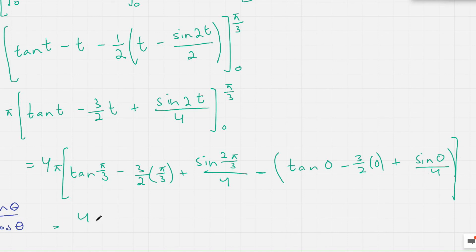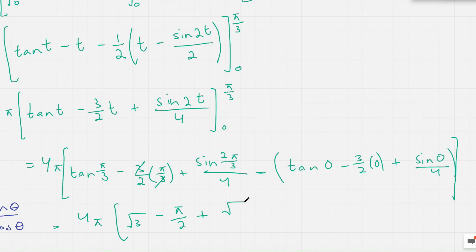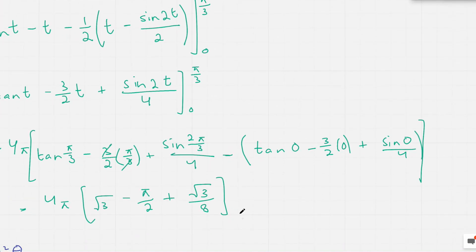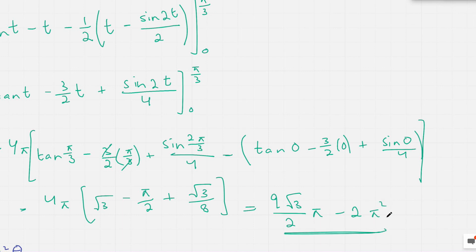So we're left with 4 pi. Tan of pi over 3 is root 3. Three-halves times pi over 3 gives pi over 2, because the 3s cancel. And sin of 2pi over 3 is root 3 over 2, so that gives root 3 over 8. Solving further, we get the exact volume as 9 root 3 over 2 times pi minus 2 pi squared.